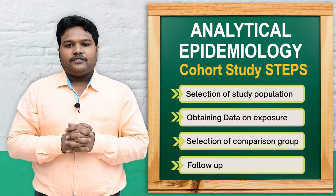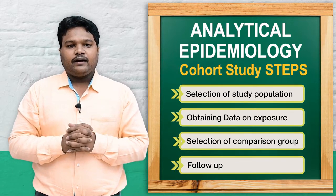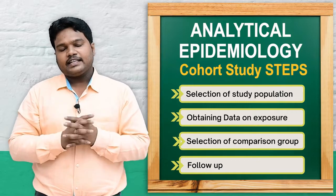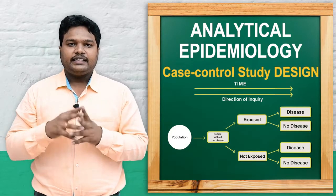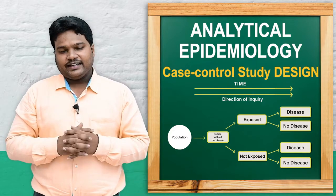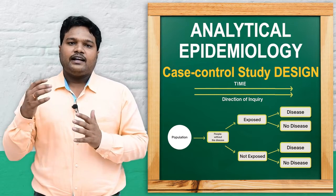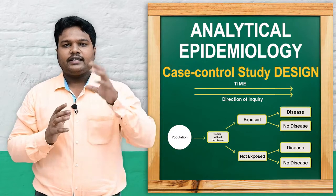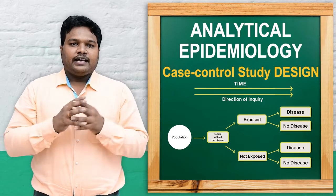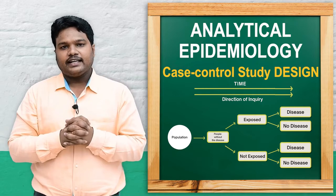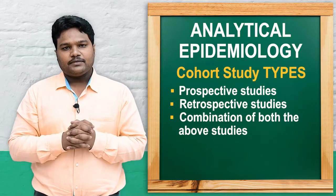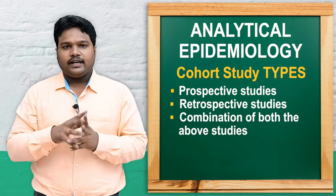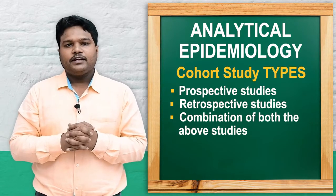The steps of cohort study are: first, selection of study population; second, obtaining data; third, selection of comparison groups; fourth, follow-up; and fifth, analysis. Unlike the case control study design, in cohort studies both the time of study and the direction of the study move forward together. Cohort studies are further classified into retrospective, prospective, and combined types, where the epidemiologist uses both retrospective and prospective steps when essential.